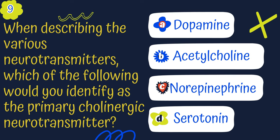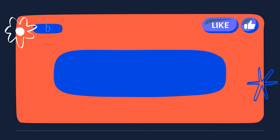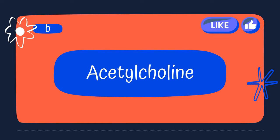Question 9. When describing the various neurotransmitters, which of the following would you identify as the primary cholinergic neurotransmitter? Is it A. Dopamine, B. Acetylcholine, C. Norepinephrine, or D. Serotonin? The answer is acetylcholine.